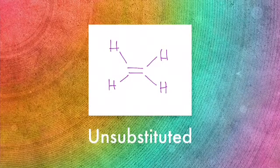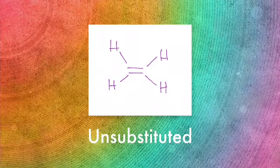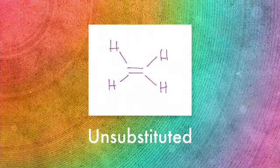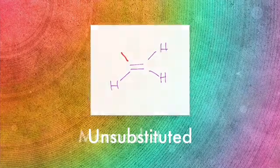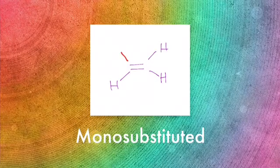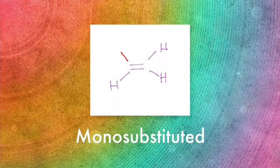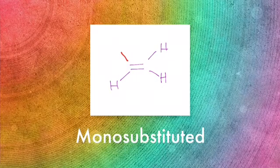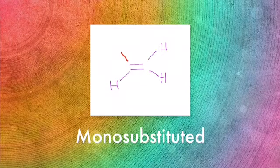First we have an unsubstituted alkene, and as you can see by the image, that means that all of its substituents are hydrogens. Next is a monosubstituted alkene, which has three hydrogen substituents and one group that is not hydrogen.